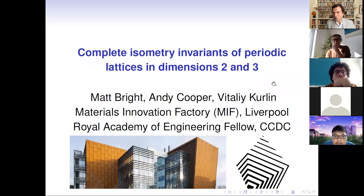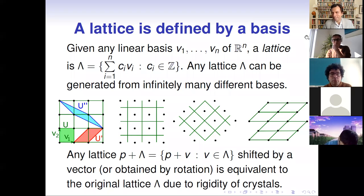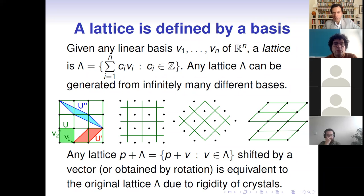I will start from dimension two. Our papers are quite technical and already quite long, but let's try. So first the general definition: we are talking about lattices. Formally, a lattice is defined by a linear basis, and here the definition is given in any n-dimensional Euclidean space. A lattice is simply an infinite collection of integer linear combinations of basis vectors, with coefficients c_i being integer numbers.